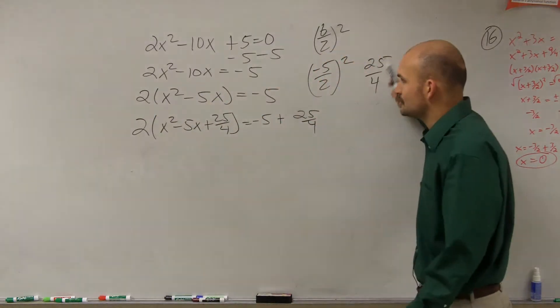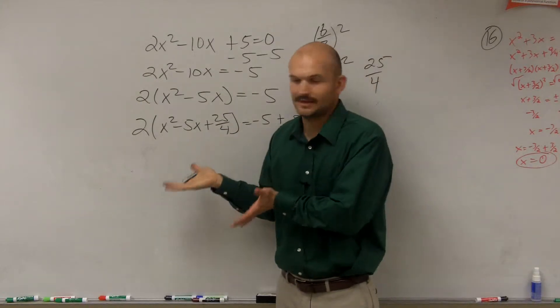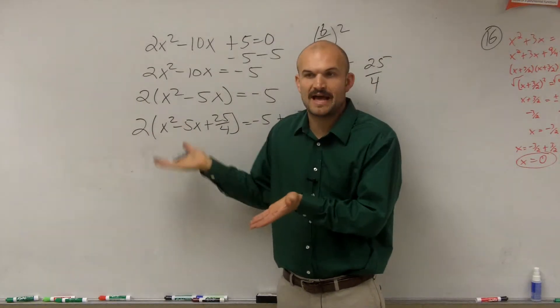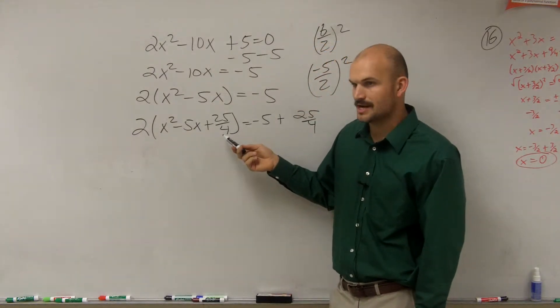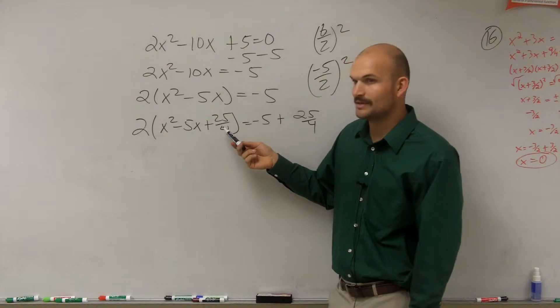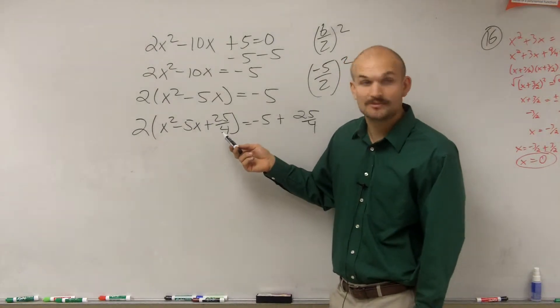So when I do my b divided by 2 and I add 25 over 4, if you're thinking about lifting this up, let's find the value of this. Is this really 25, did I really add 25 over 4 to this side? Or is that 25 over 4 being multiplied by something? It's being multiplied by something.